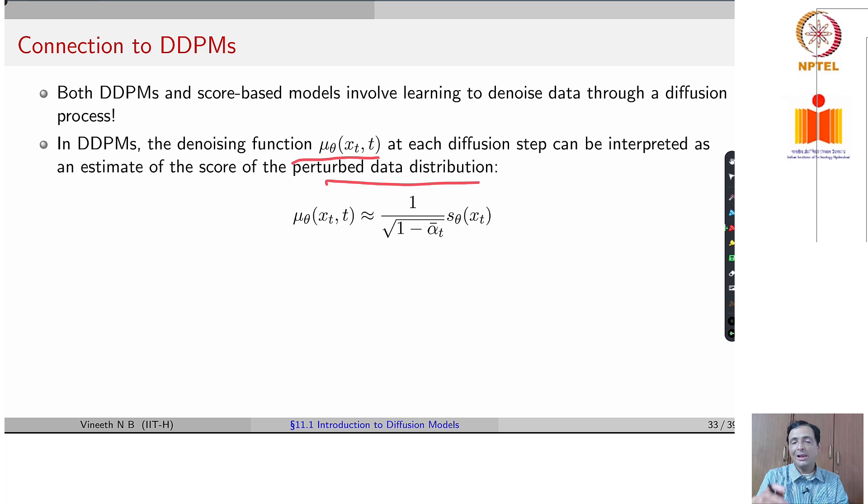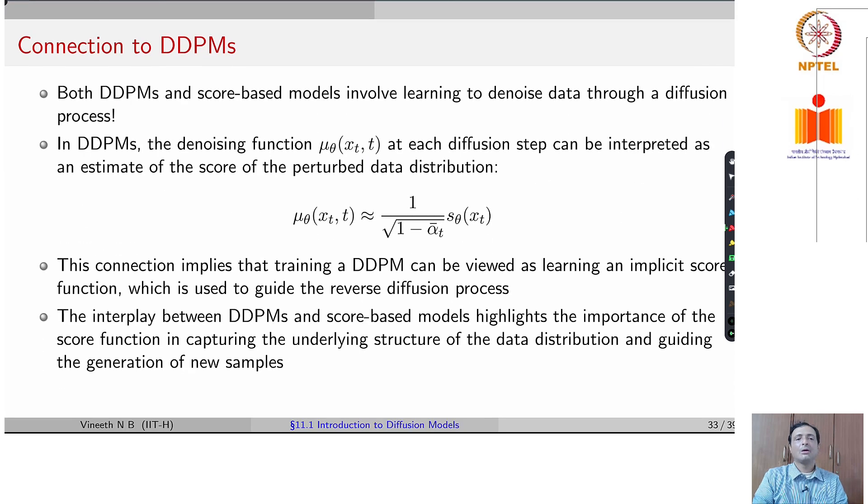This connection shows that training a DDPM can also be viewed as learning an implicit scoring function at every time step which guides the reverse diffusion process. This connection between DDPM and score based models is often used to highlight the importance of the scoring function in capturing the underlying structure of the data distribution and thus generate new samples.